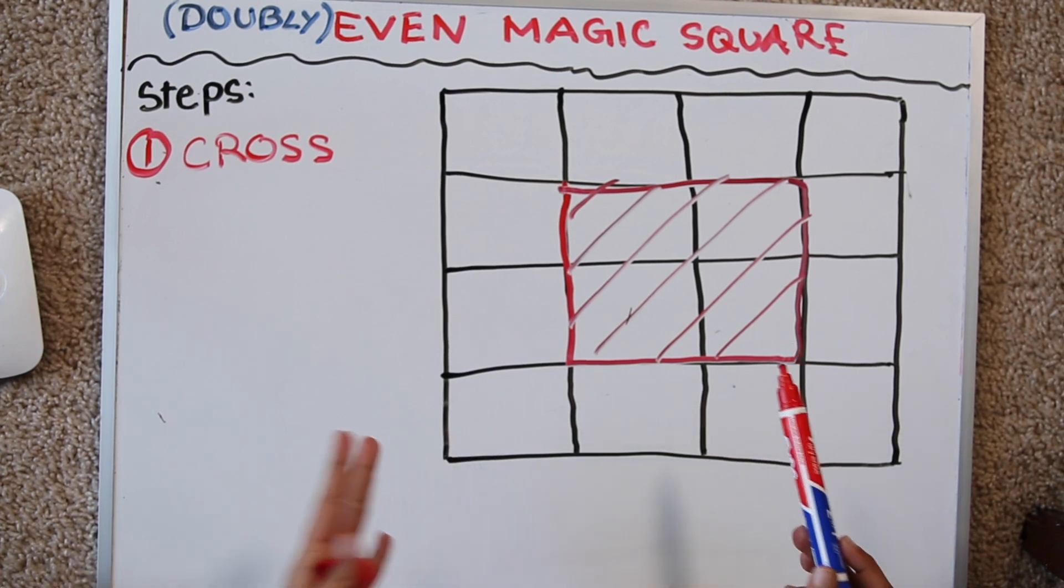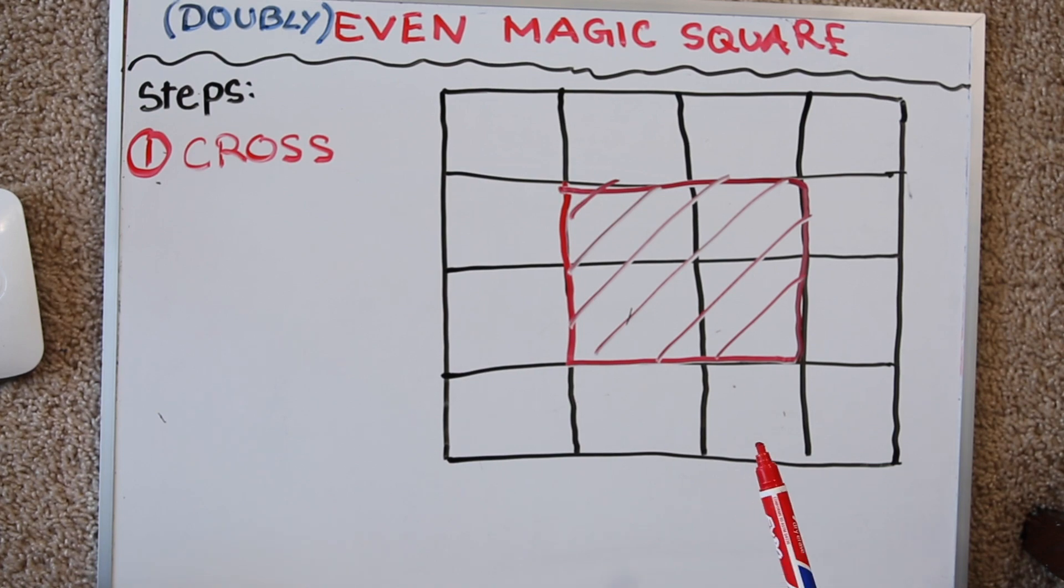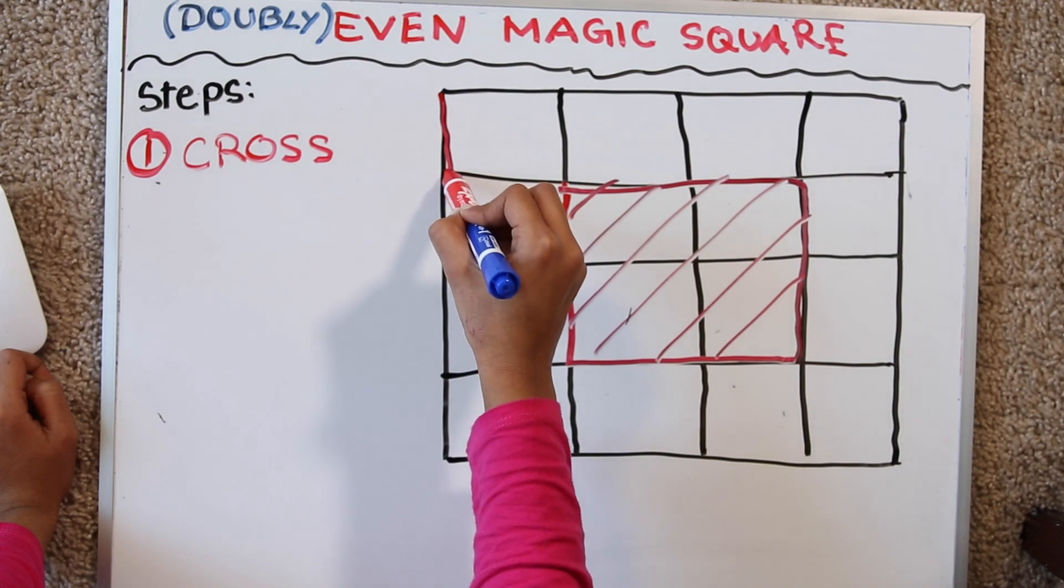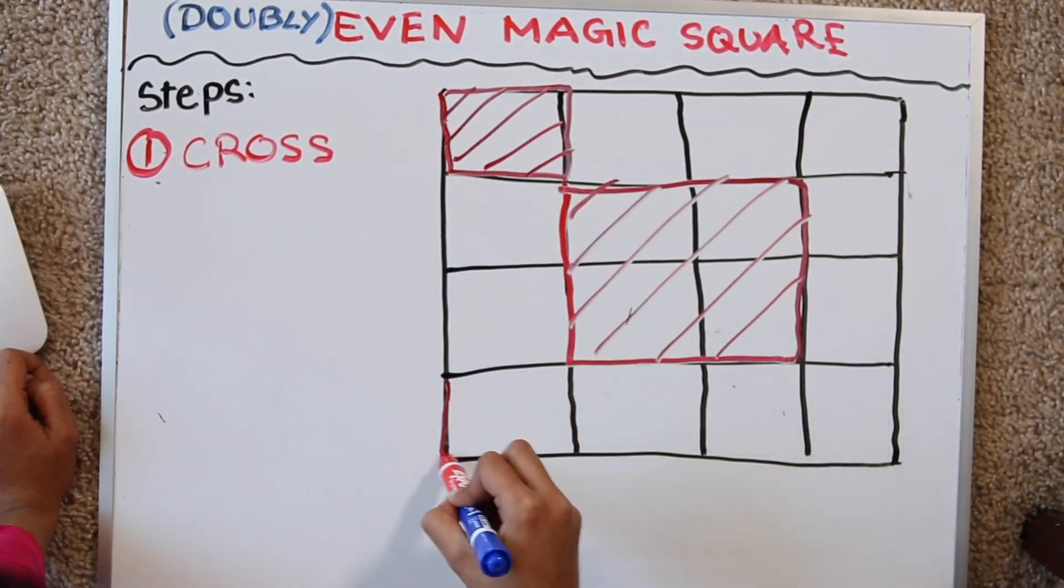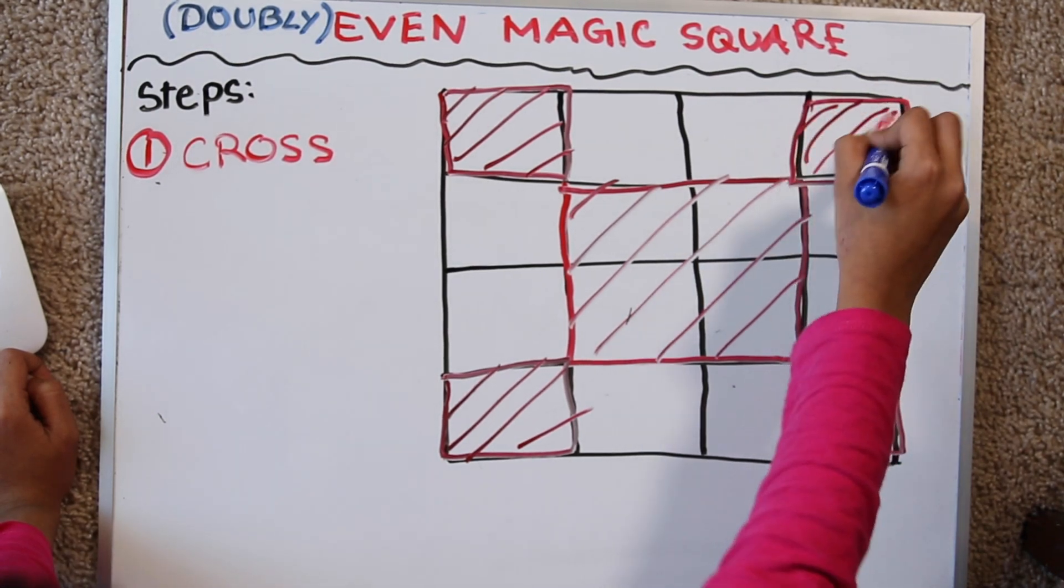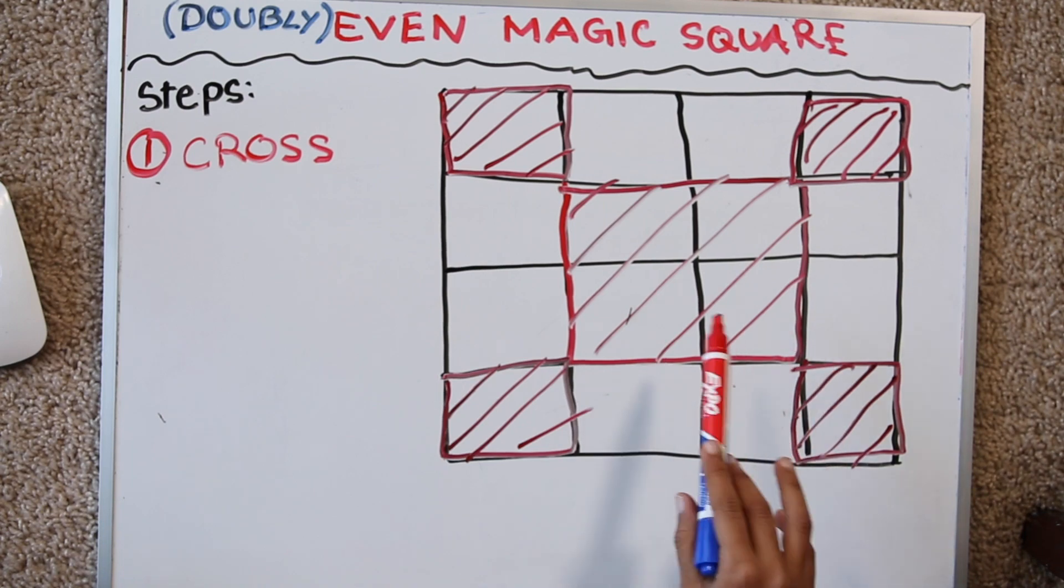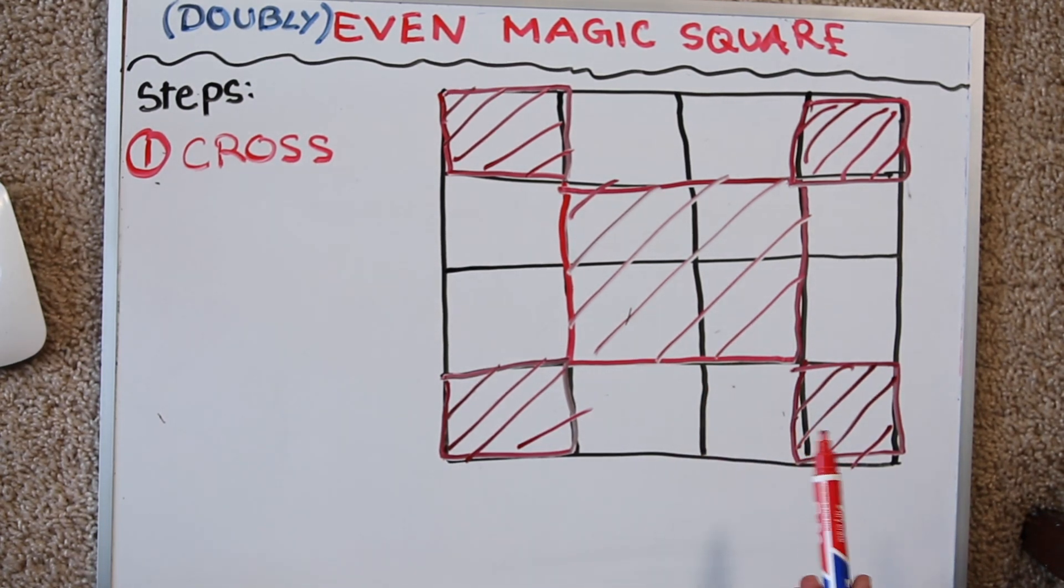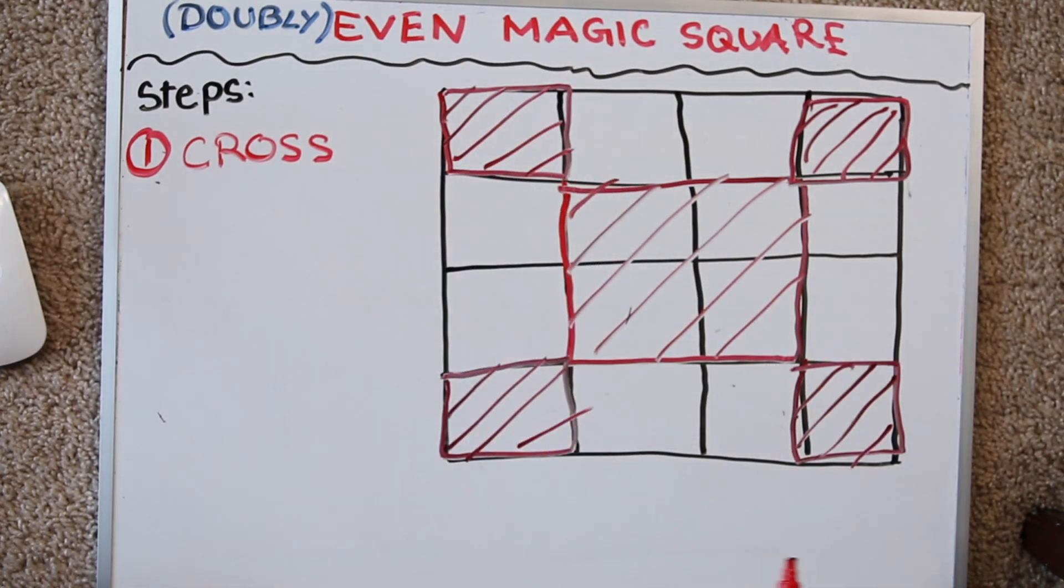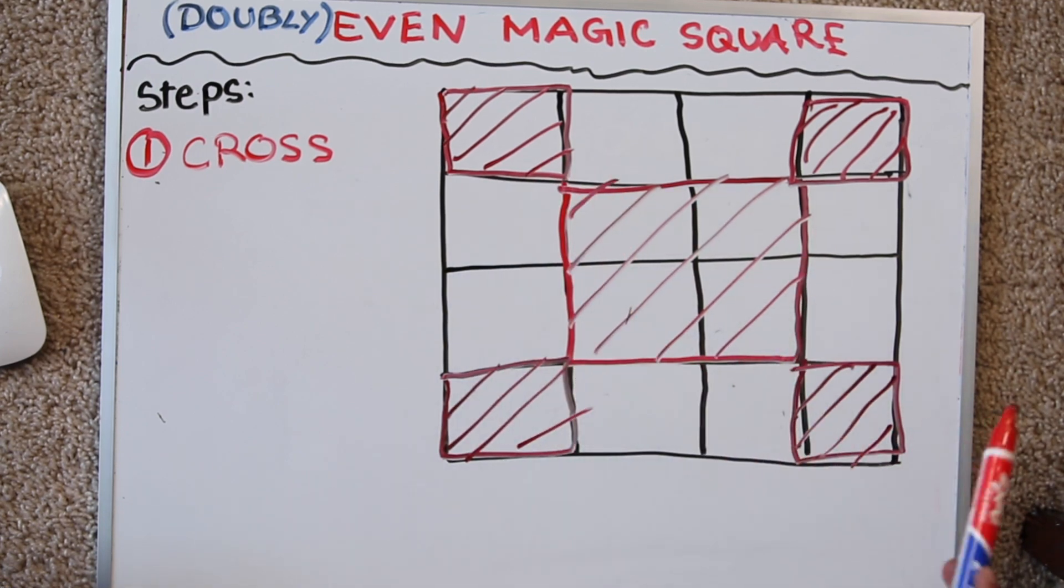In the next doubly even number 8 the center would be 4 by 4 because that's the half of 8 by 8. Now there will be 4 corners. Remember that the corners are always 1 fourth the size of the whole square. For example in an 8 by 8 square there will be 2 squares colored in at the corner. In this case it's 1 because 1 is 1 fourth of 4.